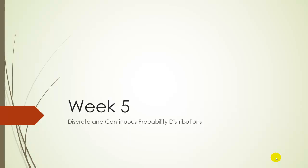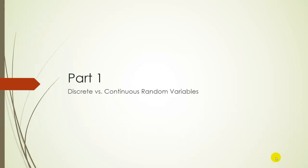For week five, we'll be exploring discrete and continuous probability distributions. So to start off, in part one, we'll discuss discrete versus continuous. What does that mean?